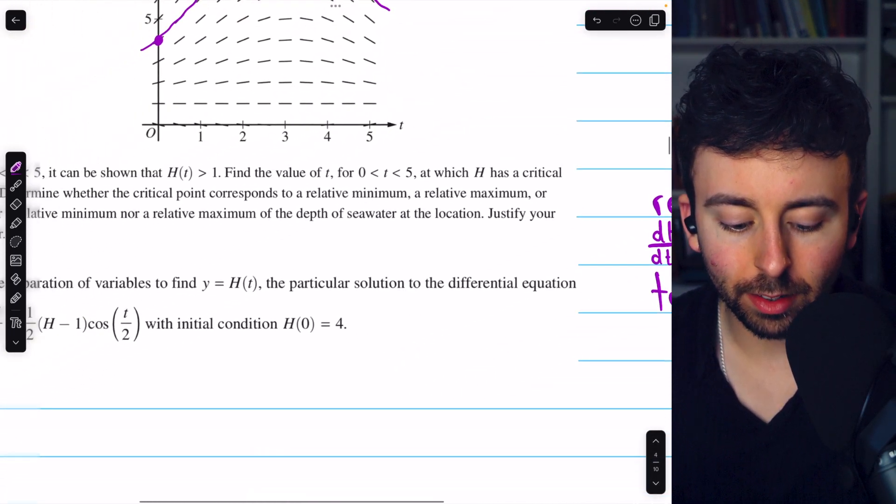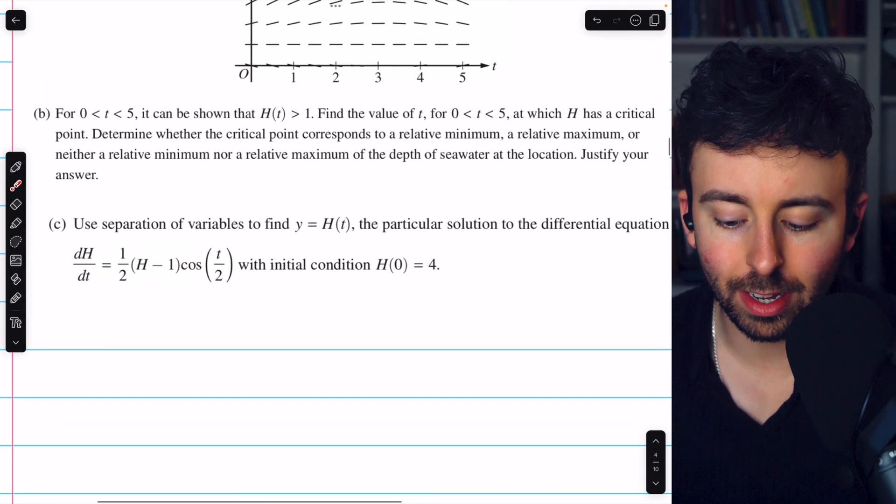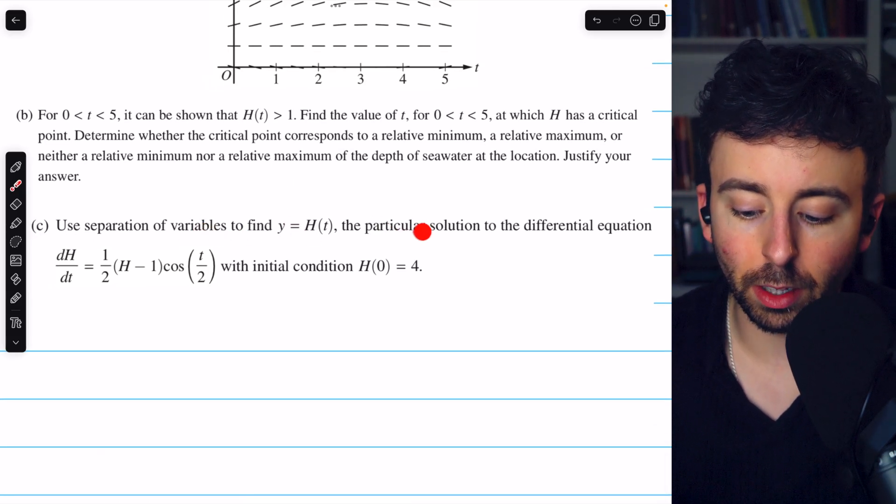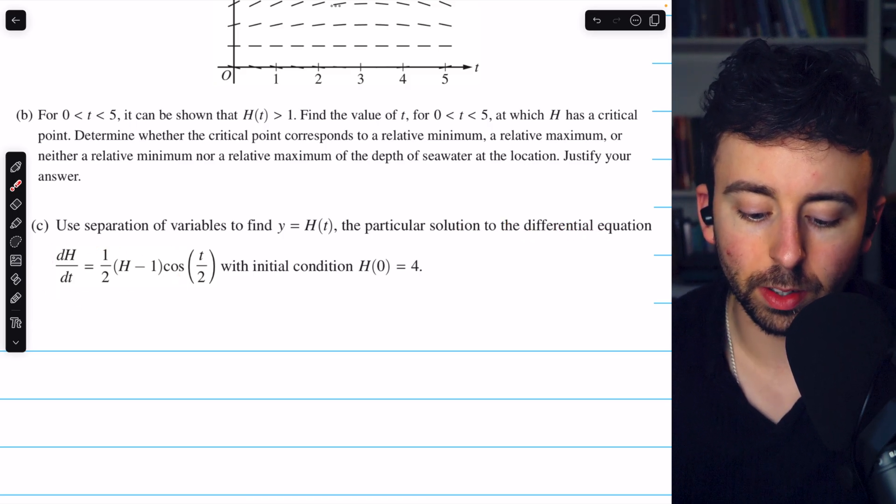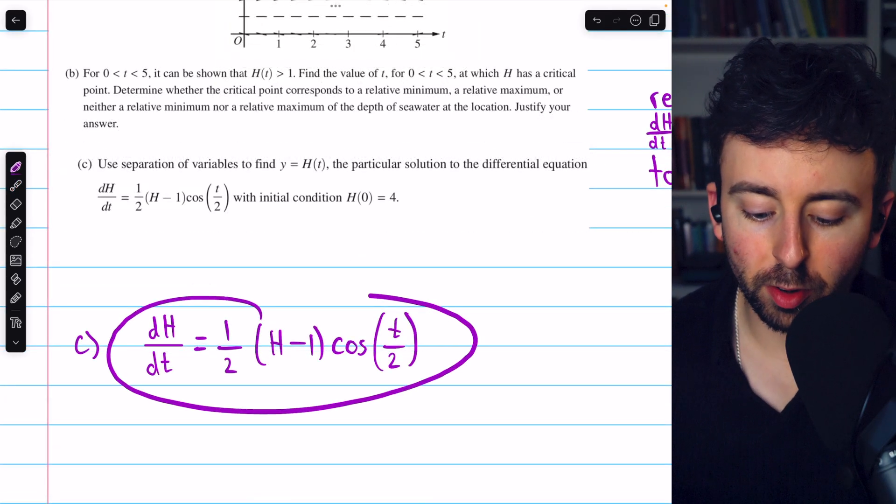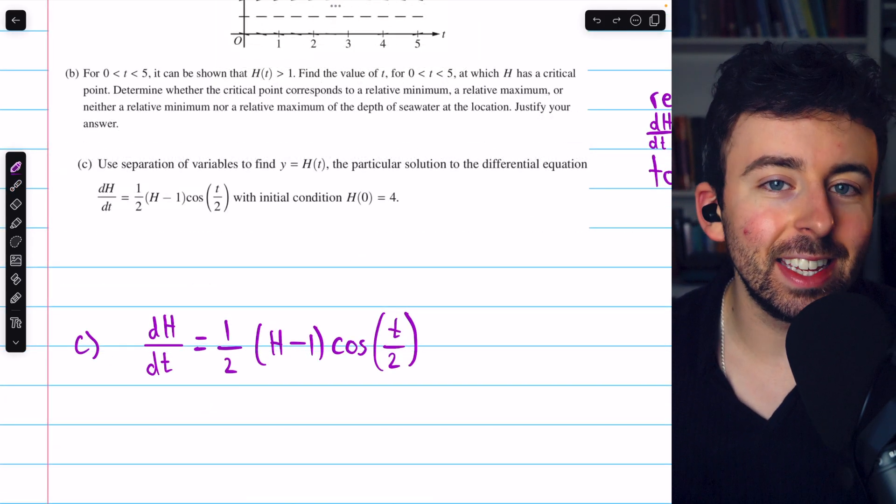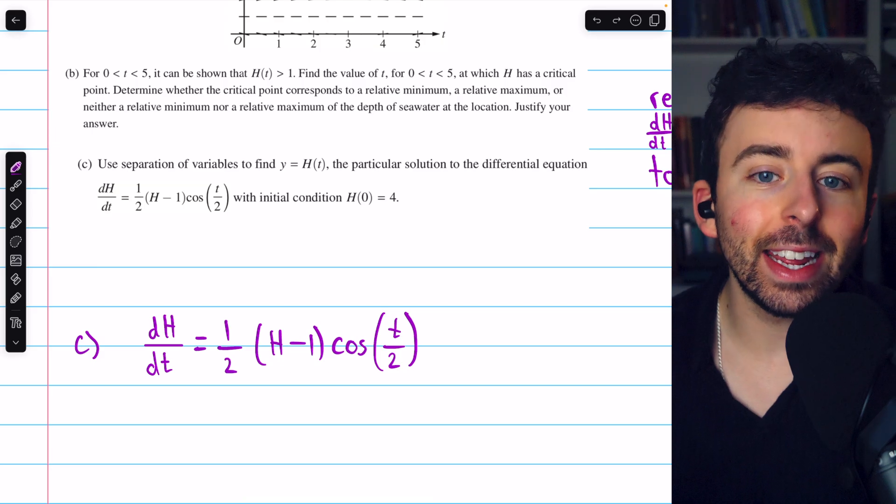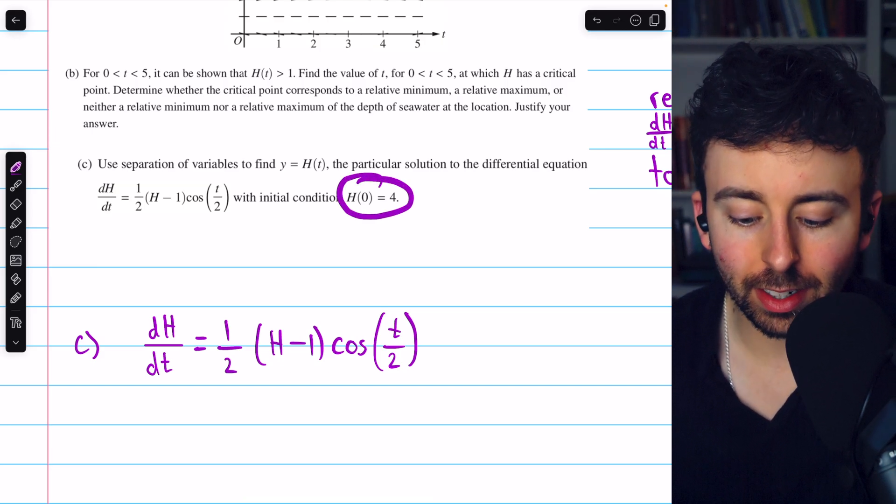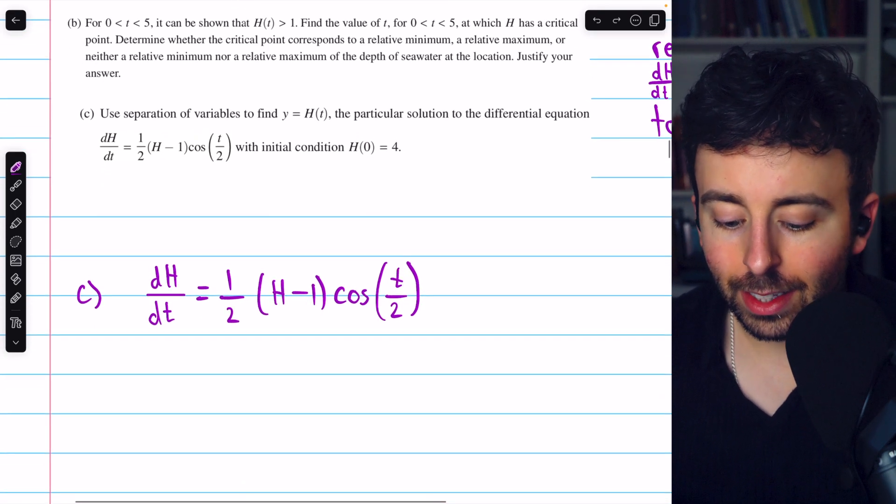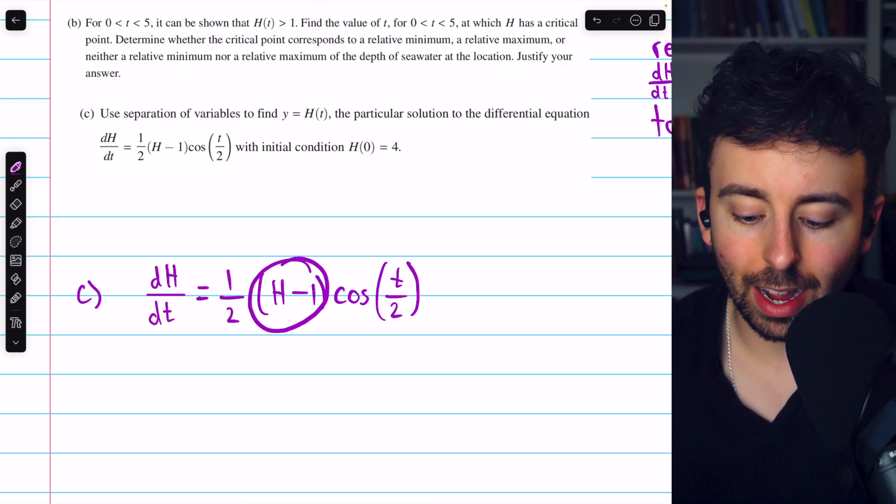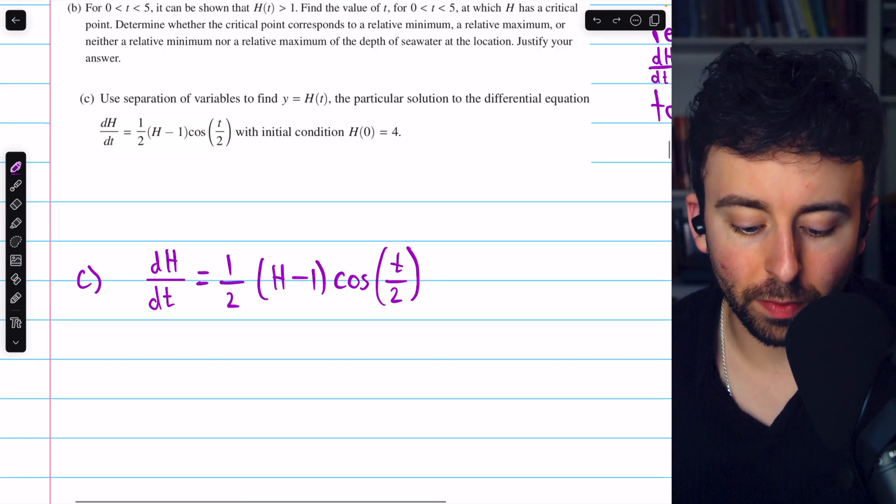Let's go ahead and finish with part C. Use separation of variables to find y equals h(t), the particular solution to the differential equation that was given, with the initial condition h(0) equals four. So we'll take this differential equation, separate the t's and the h's, and then integrate. Then we can use the given initial condition to solve for the arbitrary constant and get our particular solution. Let's multiply both sides by dt and divide both sides by h minus one in order to separate the variables.